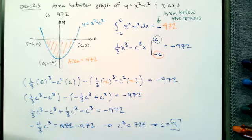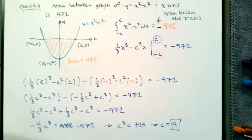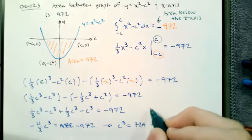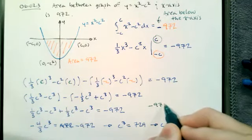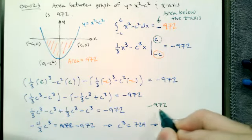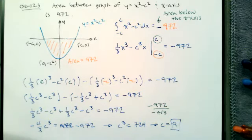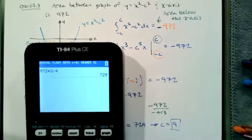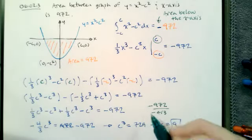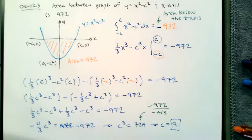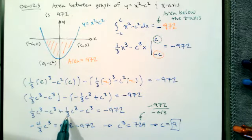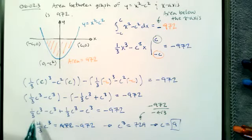How did you get the 729? I took negative 972 and divided by negative four-thirds. So I needed to isolate the c cubed. I did negative 972 divided by negative four-thirds, which is the same as multiplying by three-fourths and dropping the negatives. All the c cubed values were combined: negative two plus one-third plus another third gives negative six-thirds plus two-thirds, which is negative four-thirds.